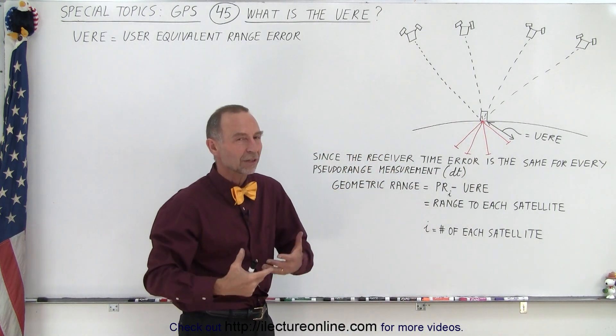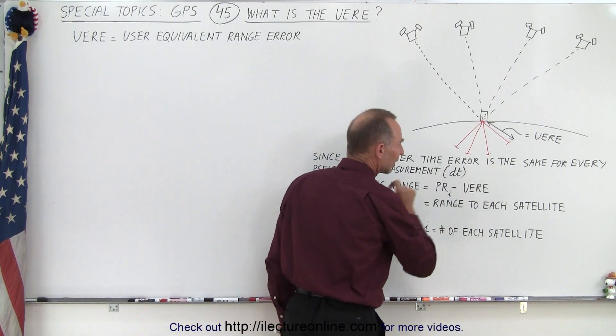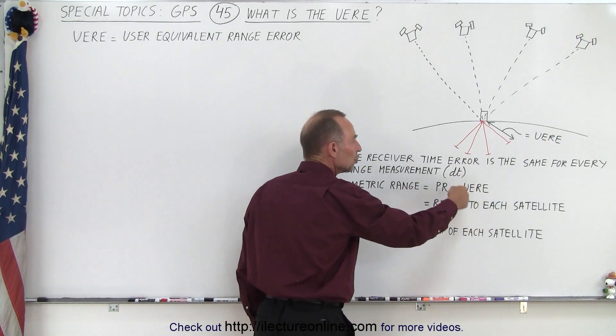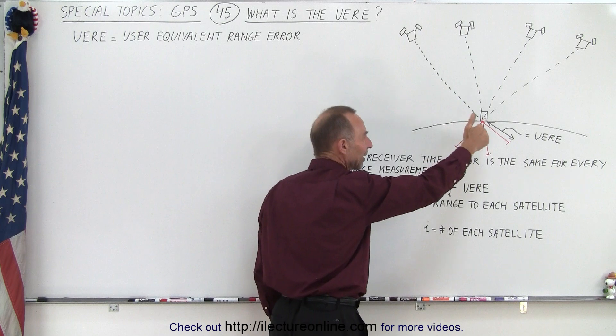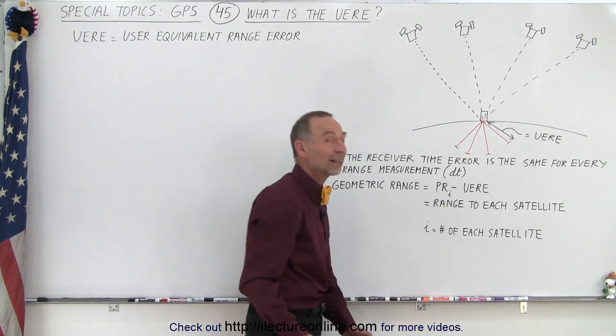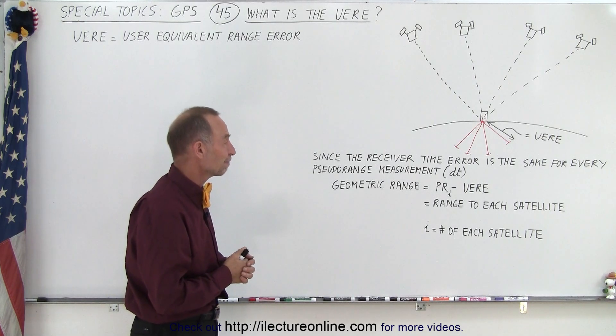So that makes the job at least a little bit cleaner and easier to work with, we just need to figure out how to come up with this value and that will then give us the range to each satellite. Notice the UERE is going to be the same for every measurement, the pseudo-range of course is going to depend upon which satellite we're measuring from or to.